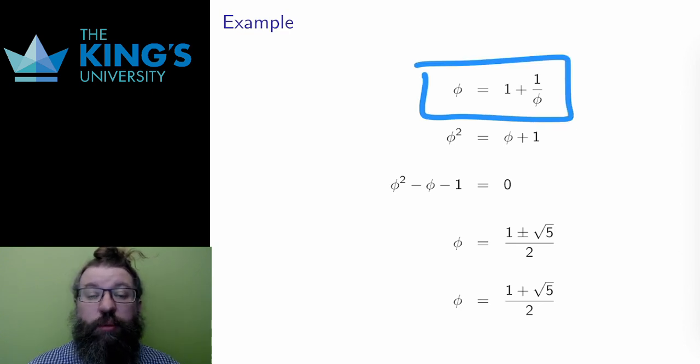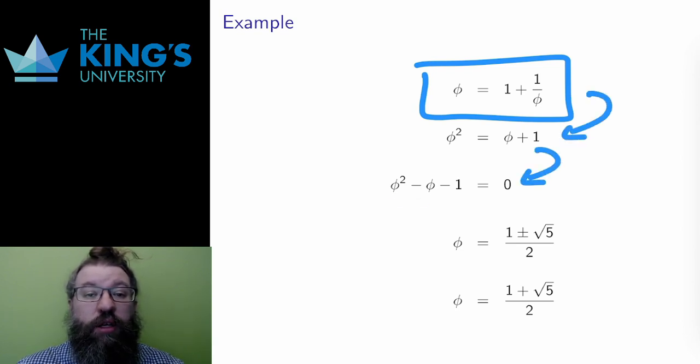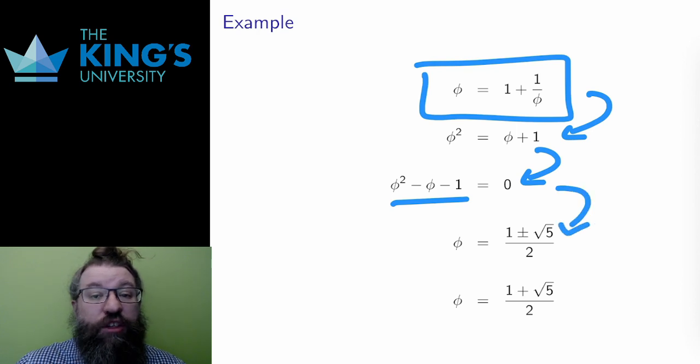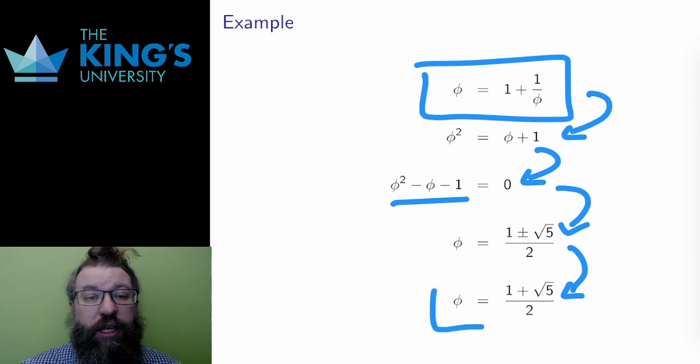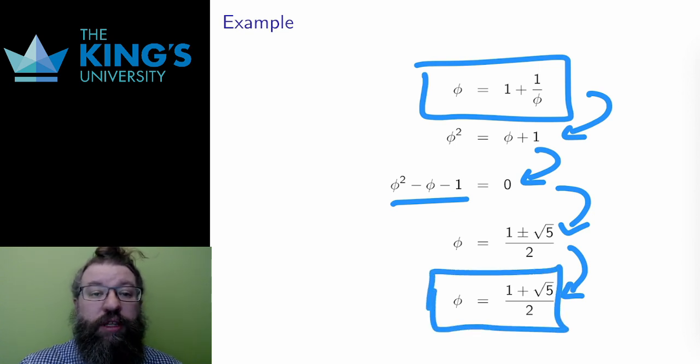I multiply both sides by phi to clear denominators. Then I group everything to get a quadratic. I use the quadratic equation. I get two values. I'm going to discard the negative. The terms of the sequence are always positive, so there's no way to approach a negative number. Therefore, the limit of the ratio of the Fibonacci terms is this number, 1 plus root 5 over 2.